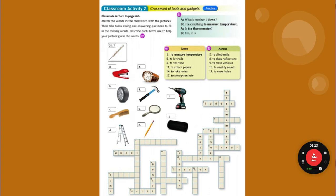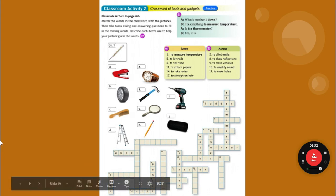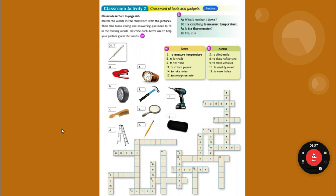Now we have more things here. Three across is to stir liquids — you do that with a spoon, S-P-O-O-N. To add numbers is E — that is a calculator, C-A-L-C-U-L-A-T-O-R.